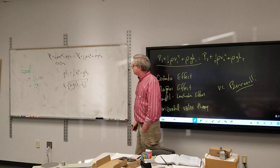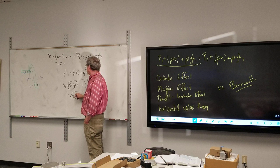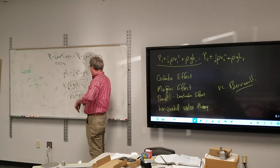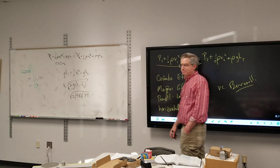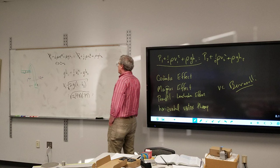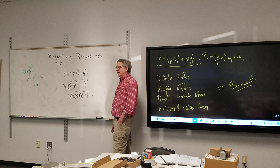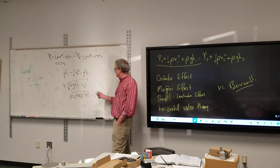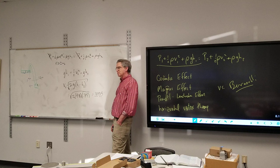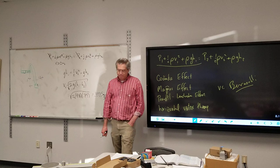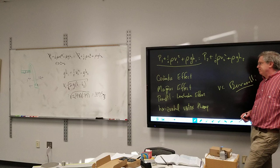V2 is square root of 2 g (H1 minus H2), which is square root of 2 times 9.8 times 0.79. So a little under 4 meters per second is how fast it's going to be coming out. Nine miles an hour.